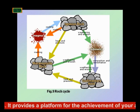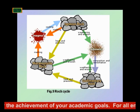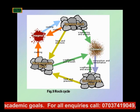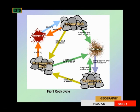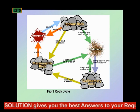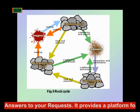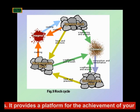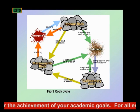Igneous rock is formed by the cooling and solidification of molten magma that is injected from beneath the earth's crust. As a result of this injection, based on whether the injection is forceful or gentle, we can have what we call plutonic or intrusive igneous rock. Plutonic or intrusive igneous rock are formed when molten magma cools and solidifies gently beneath the earth's surface.